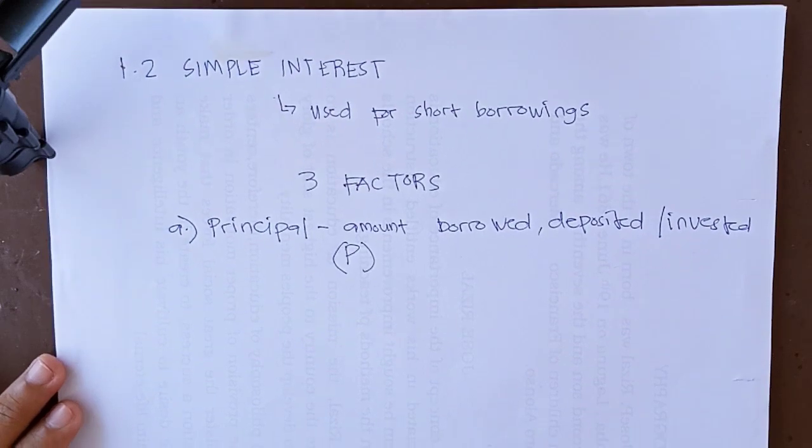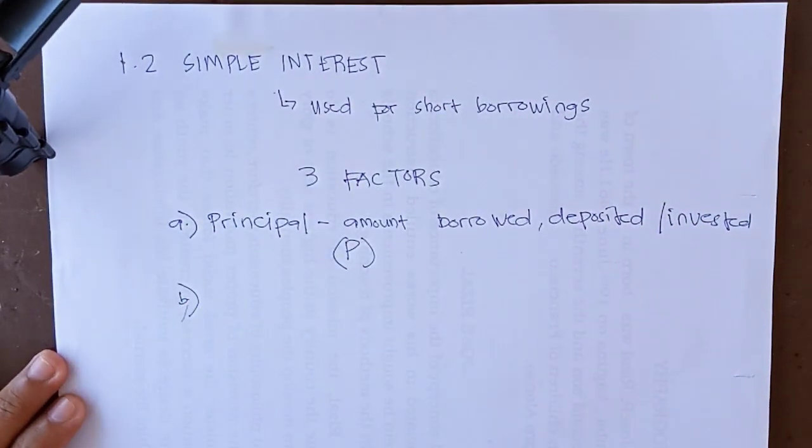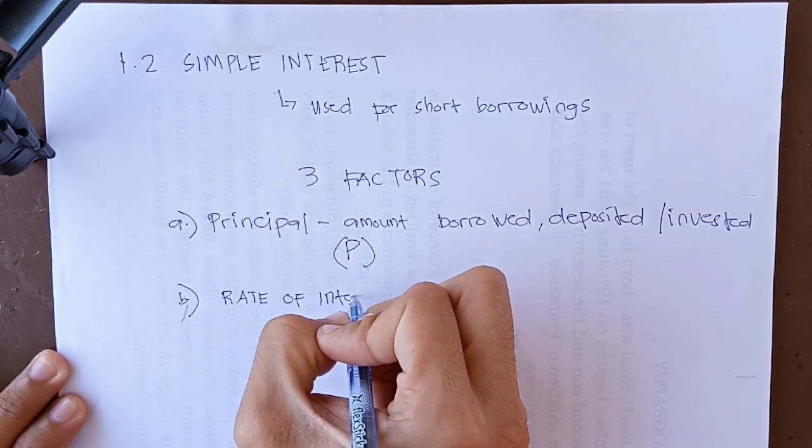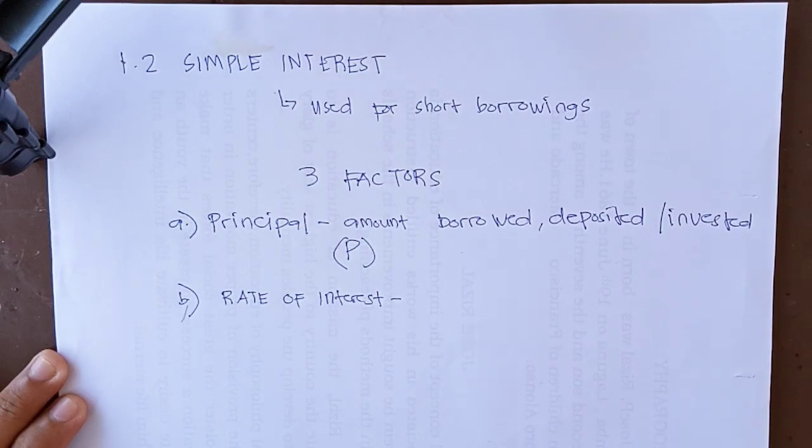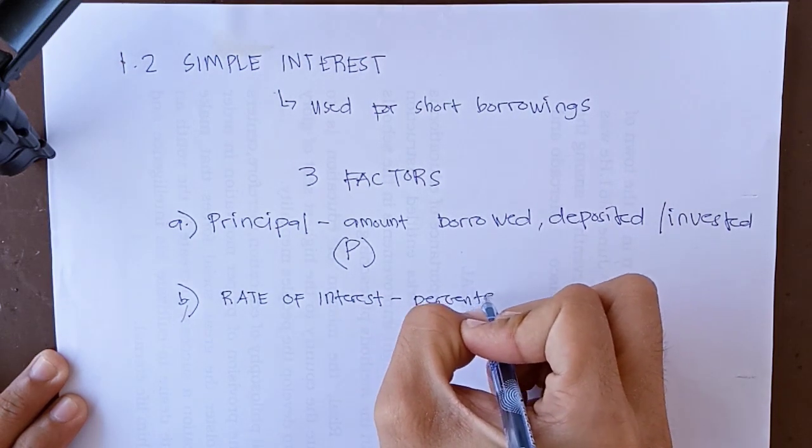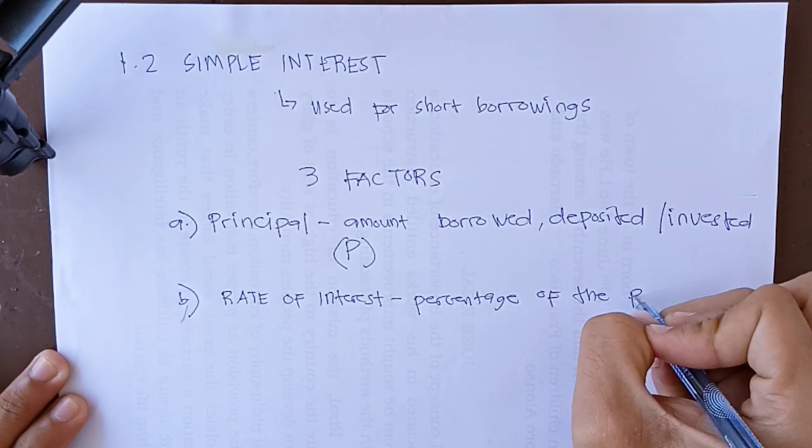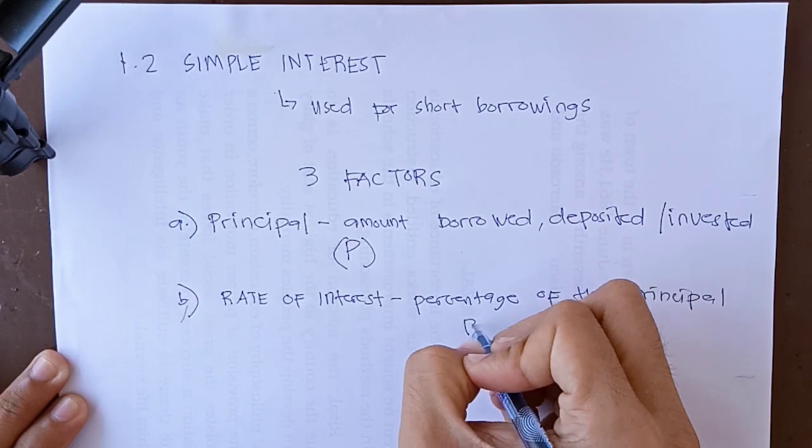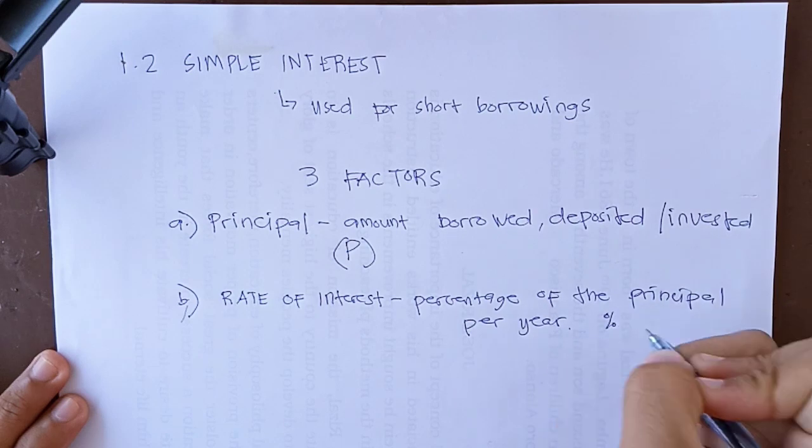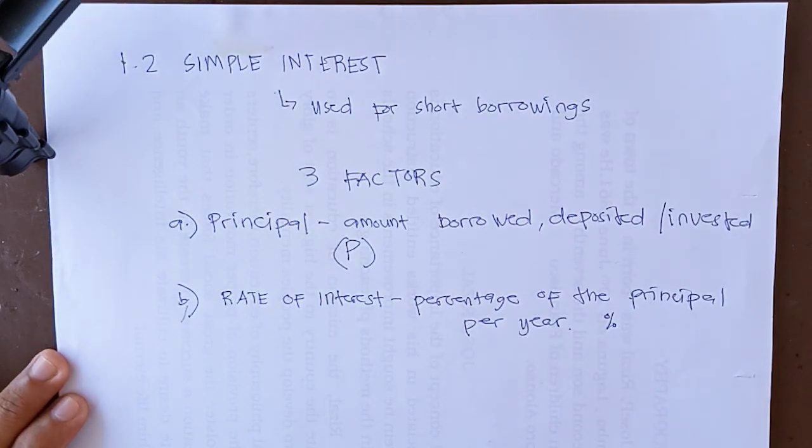The second factor we have the rate of interest. It refers to the percentage of the principal per year. It is generally expressed in terms of percent. We will denote the rate of interest with the capital letter R.